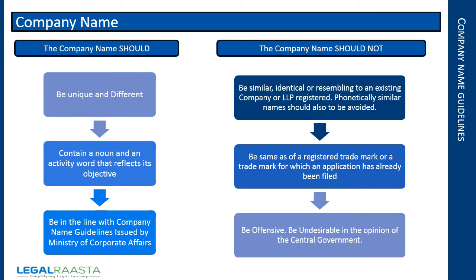The company name should be unique and different, contain a noun and an activity word that reflects its objective, and be in line with company name guidelines issued by the Ministry of Corporate Affairs. The company name should not be similar, identical, or resembling an existing company or LLP. Phonetically similar names should also be avoided, and it should not be the same as a registered trademark or one for which an application has already been filed, nor be offensive or undesirable in the opinion of the central government.